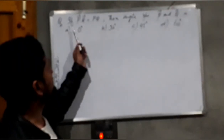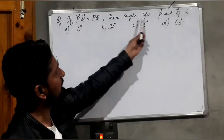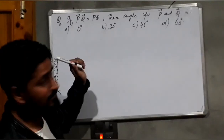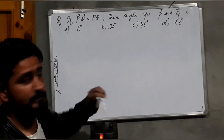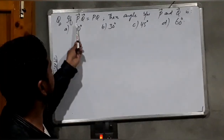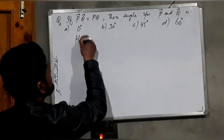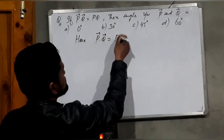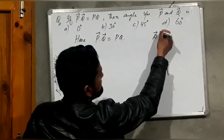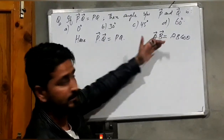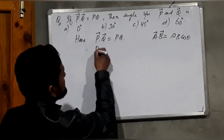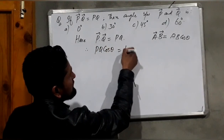Our second question: if P·Q equals PQ, then the angle between P and Q is — with options 0°, 30°, 45°, and 90°. This is again a question on scalar product. The condition given is P·Q equals PQ. We know that A·B equals AB·cos(θ), so here P·Q equals PQ·cos(θ) equals PQ.